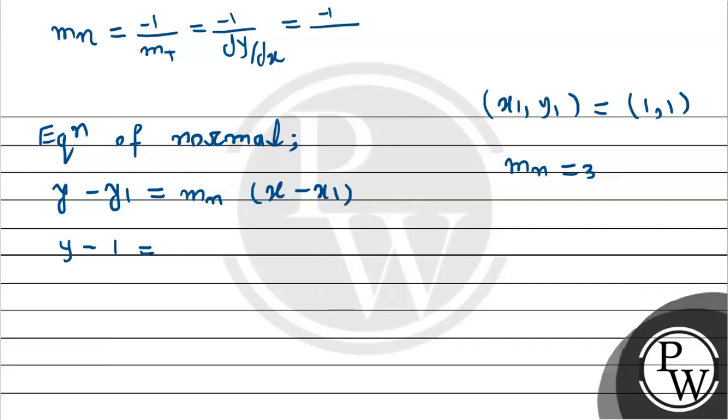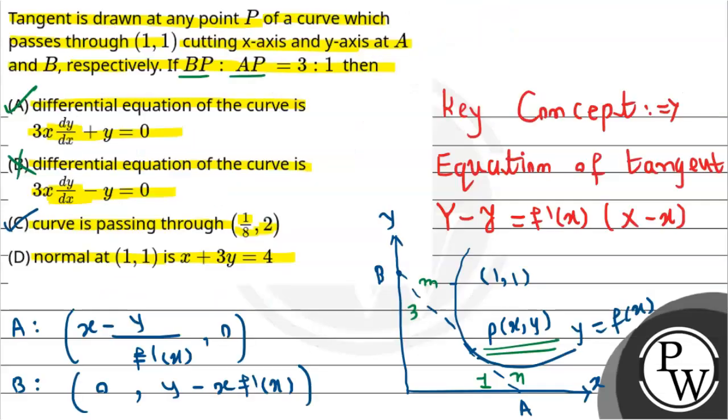The slope of the normal is -1 divided by dy/dx equals -1/(-y/3x) equals 3x/y. At x equals 1 and y equals 1, slope equals 3. So we get y - 1 equals 3(x - 1). Simplifying: y equals 3x - 2. This is the equation of the normal at (1,1). Checking: this is not the same equation, so option D is incorrect. Only options A and C are correct.